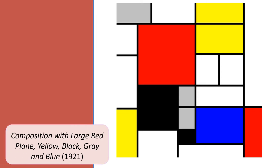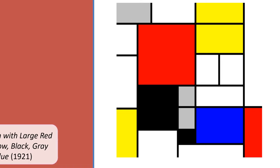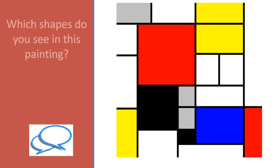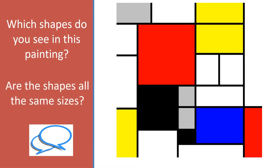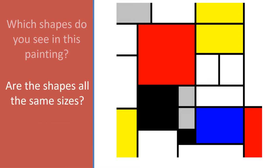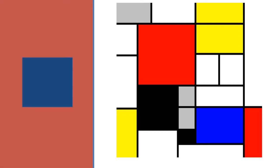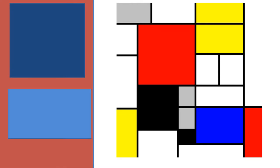Look at this painting from 1921. Which shapes do you see in this painting? Are the shapes all the same size? In this painting, Mondrian has used a number of vertical and horizontal lines to create squares and rectangles. The shapes he has created vary in size.